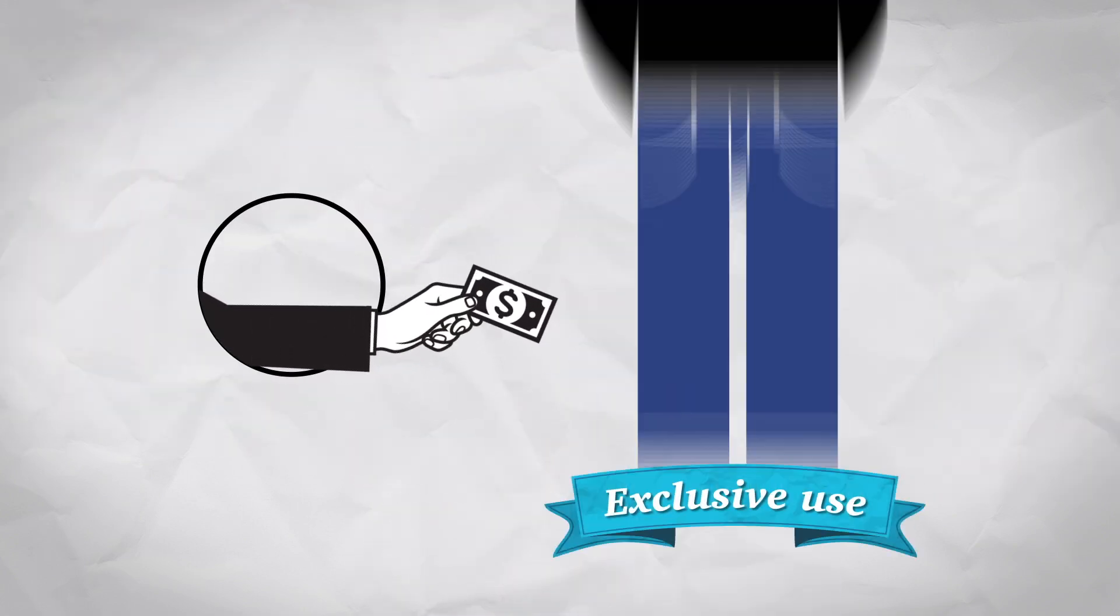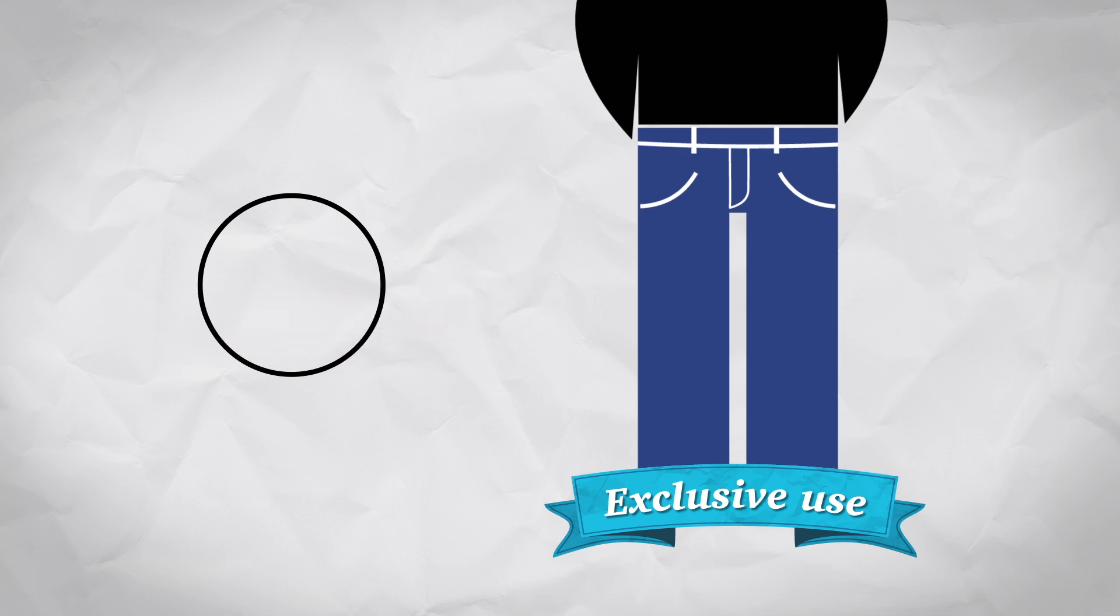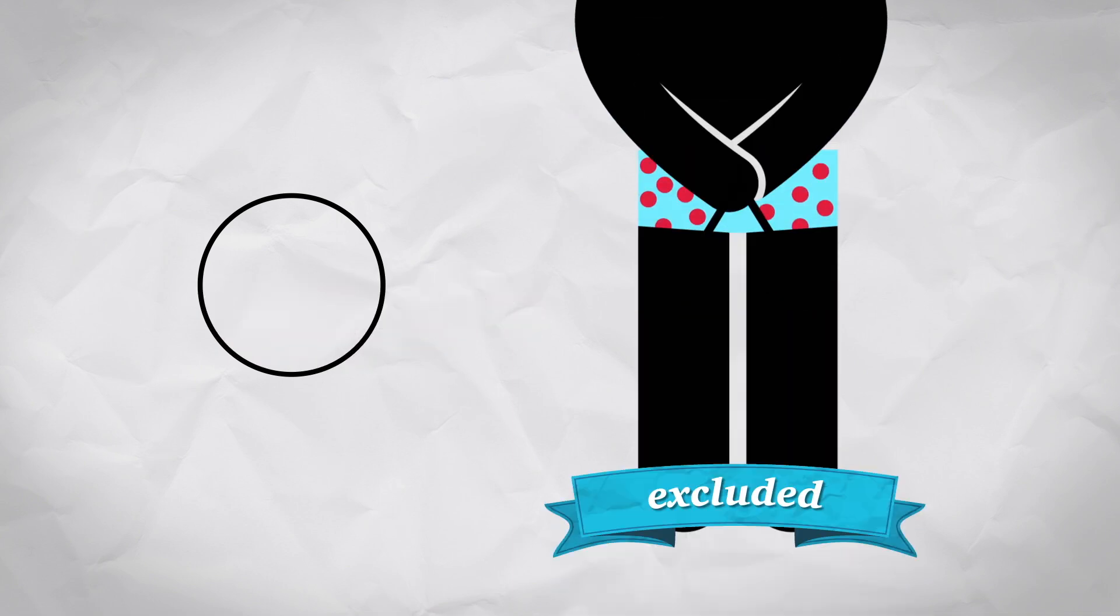If you pay for a pair of jeans, for example, then you get the exclusive use of those jeans. And if you don't pay, you are excluded from using those jeans. That's pretty obvious.